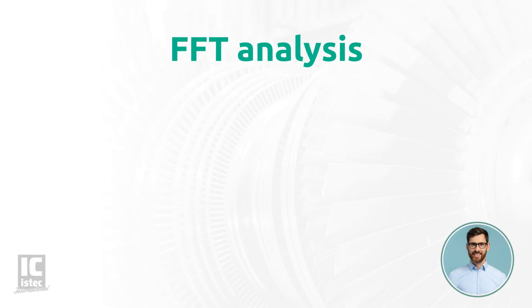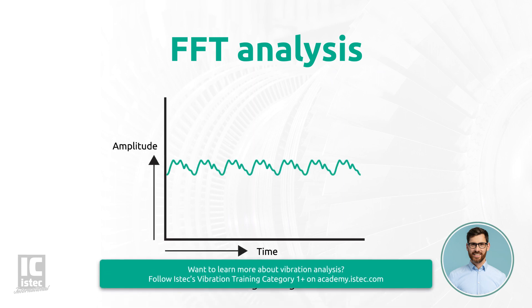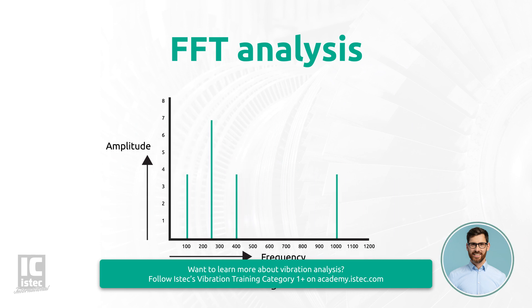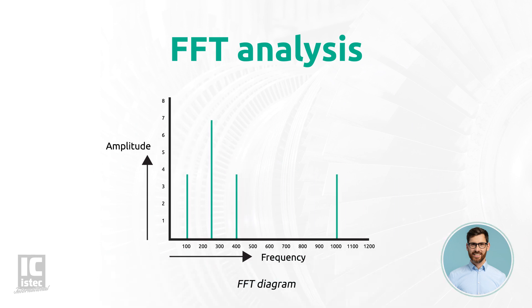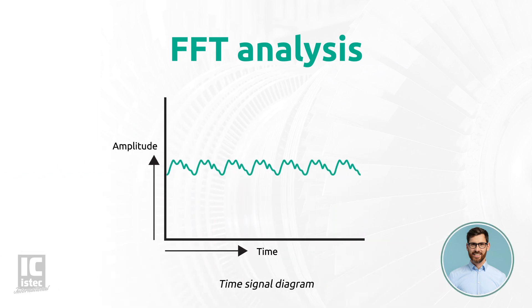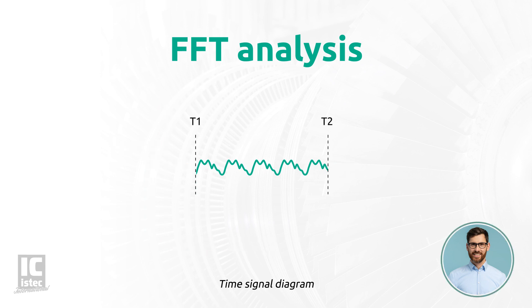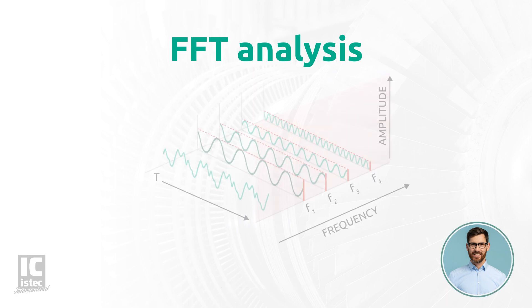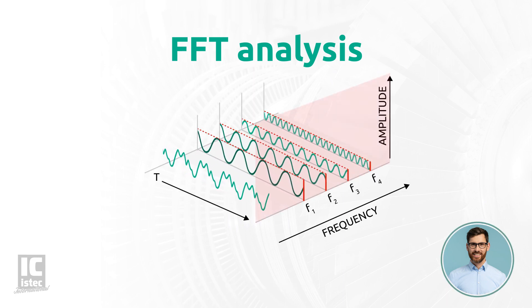We use techniques to separate signals into the different frequency components. One of these techniques is to convert a time signal diagram into an FFT diagram. From a certain period, let's say T1 to T2, a piece of a time signal is dissected into its individual frequency components. This is done for frequencies from frequency F1 to frequency Fn, dependent on the configuration of the measurement.